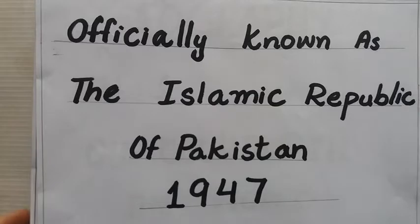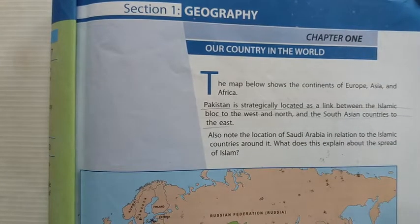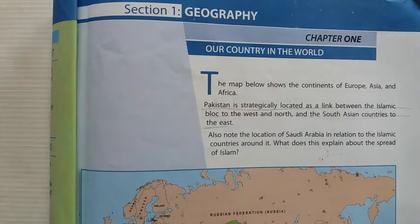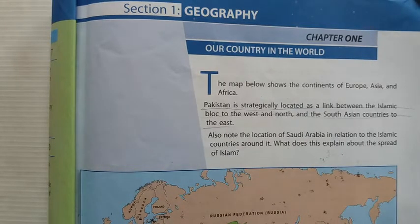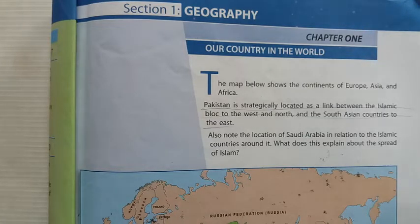Now let's start our chapter. You should have a rough copy with you, a pencil with you, and a highlighter with you. Come to page number one. Open your books — the chapter starts from page number one. The title of the chapter is 'Our Country in the World.' First, we will discuss about the location of Pakistan — that is, where is Pakistan located?